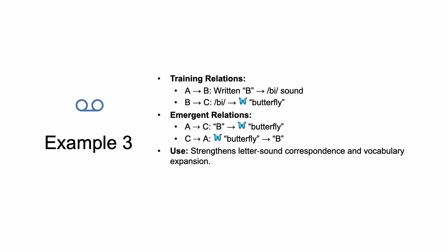For phonics: when shown a card with the letter 'B' they say the sound 'buh.' When you say 'buh' they identify a picture of a butterfly. The emergent relation is that when shown the letter 'B' they can point to the picture of the butterfly, and when shown the picture of the butterfly they should say 'buh.'